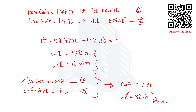This is how the problem related to case two of omitted measurement is solved. I hope you have understood the concept. You can now solve the quiz by scanning the QR code, going to the Google Form, answering all the questions, and submitting to earn your points. Thank you for watching this video — I hope to see you in the next coming videos.